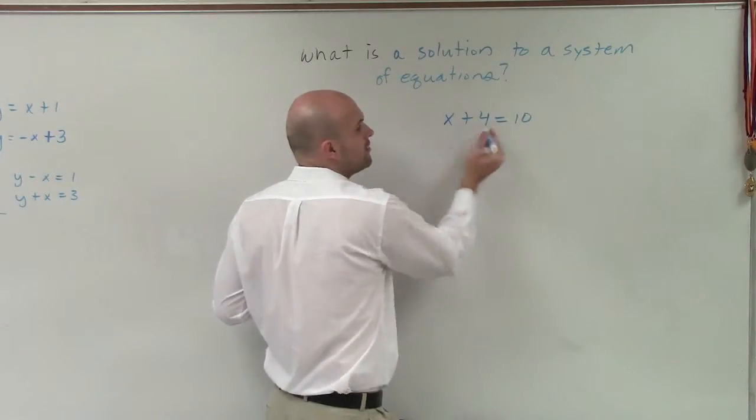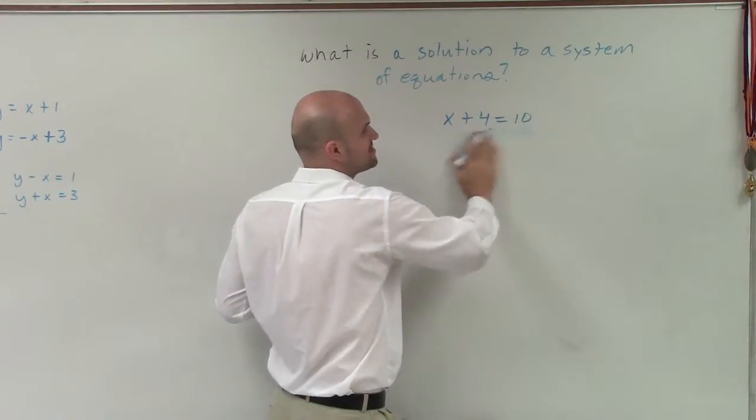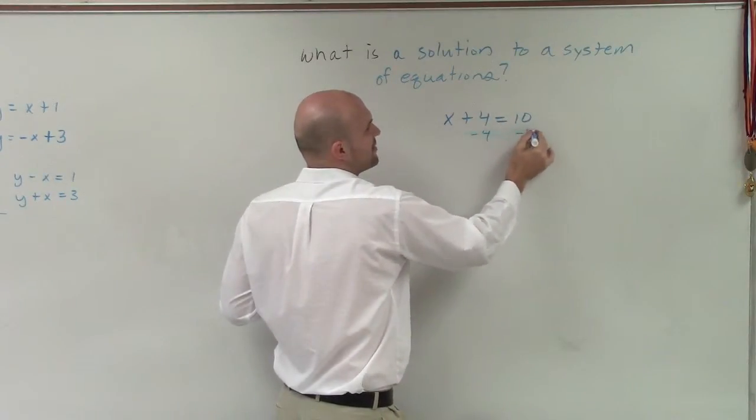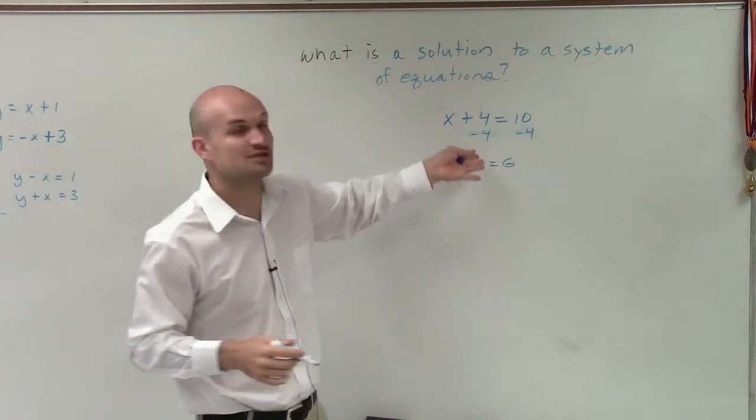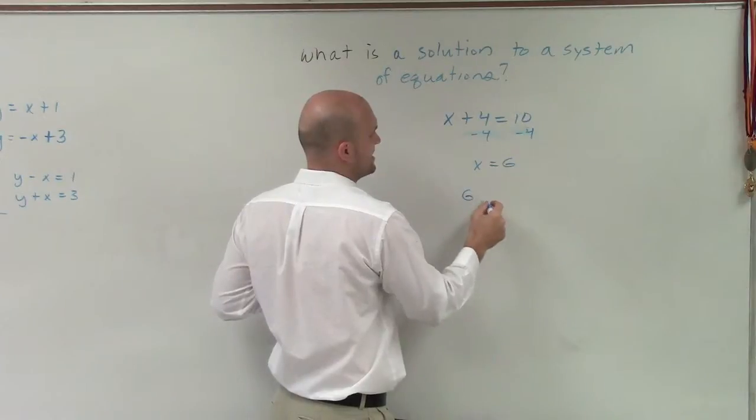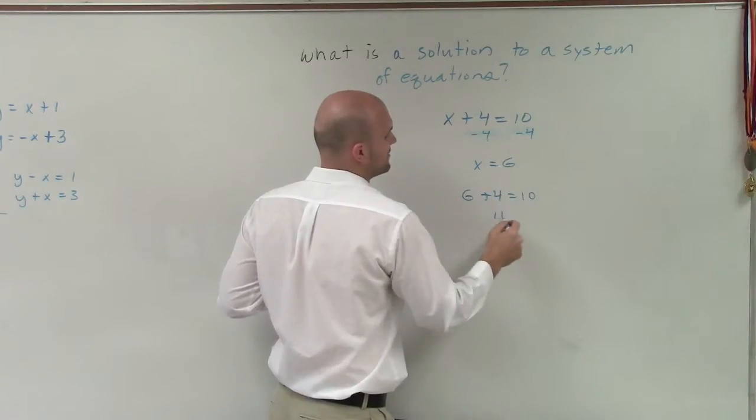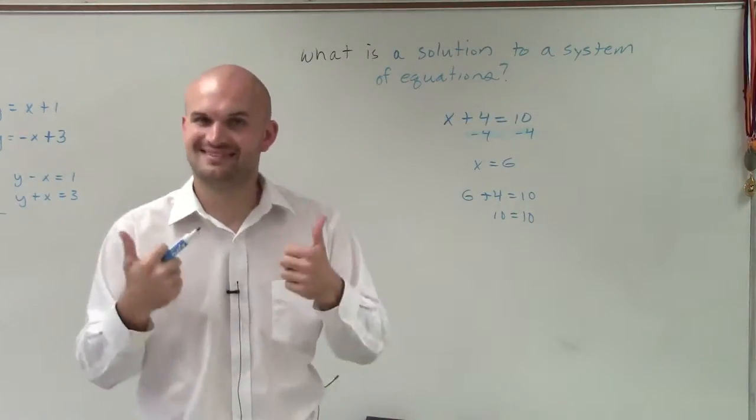What we do is we isolate our variable and use our inverse operations. So I have x equals 6. Then what we can do to ensure that this is the solution, we plug 6 in for x. So we'd say 6 plus 4 equals 10, and therefore, you can see 10 equals 10. And we have our solution.